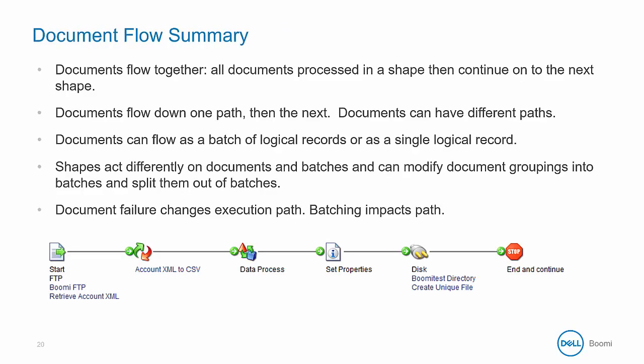In review: all documents flow as a group and are processed in each shape before continuing to the next. Documents flow down one path to completion and then sequentially down the next. Documents can and often do have different paths. Documents can flow as a batch of logical records or as a single logical record, and you can choose how documents enter the process within your connector settings. Shapes act differently on documents and batches and can modify document groupings. Document failure changes the execution path by stopping the execution of that document, and batching impacts other split documents when a single document error occurs.